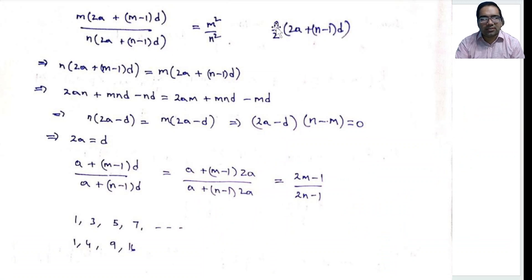We know sum of n terms is n/2 into (2a + (n-1)d). Sum of m terms is m/2 into (2a + (m-1)d). Let us see sum of m terms by sum of n terms. These two's will cancel. So we can write m(2a + (m-1)d) by n(2a + (n-1)d) equals m²/n² which is already given. Now we can cancel m from both sides and n also from both sides and cross multiply. We will get n(2a + (m-1)d) equals m(2a + (n-1)d).